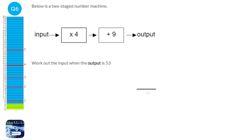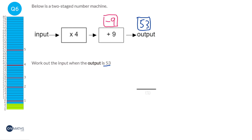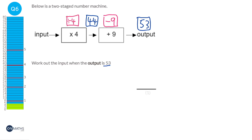In this question we're given the output as 53, so we've got to work backwards. When we work backwards through a function machine we do the opposite of what it says. This first one says plus 9, but when we go backwards we do take away 9. So we do 53 take away 9, which is 44. We can check: 44 plus 9 is 53. The next one says times 4, so the opposite is divided by 4. So we do 44 divided by 4, which gives us an input of 11. Check: 11 times 4 is 44, 44 plus 9 is 53.